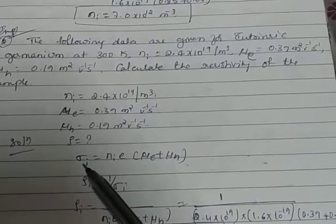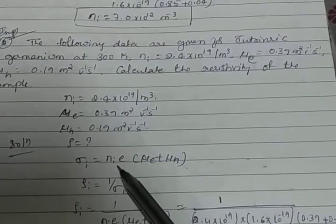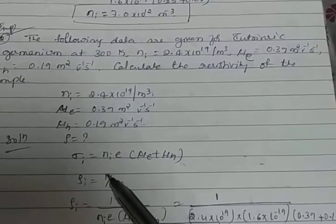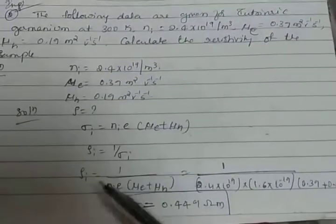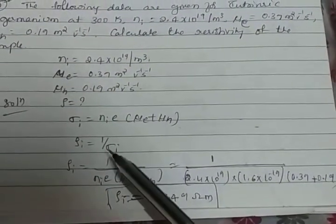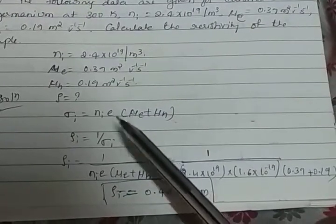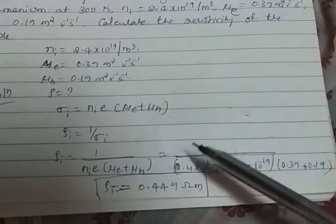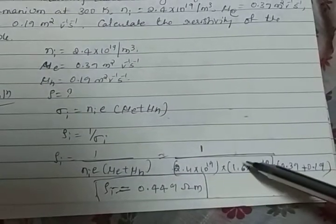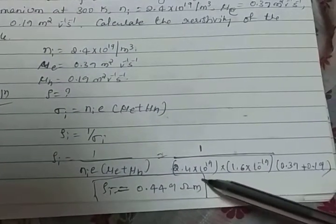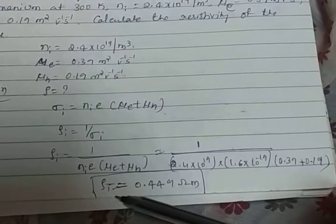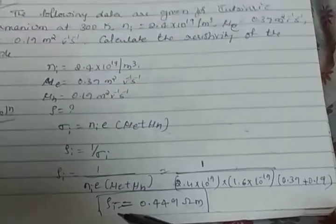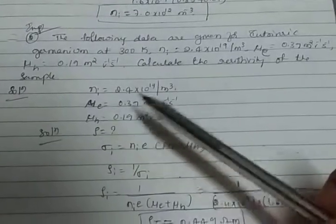Conductivity expression is sigma_i = Ni*e*(mu_e + mu_h). Resistivity is defined as reciprocal of conductivity. So rho_i equals the conductivity expression in the denominator. Then put every value in the equation. You will get resistivity of the sample.